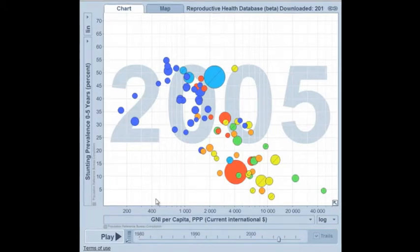China in 2005 has only about 12% of children under 5 with stunting and a gross national income per person of about $4,000.